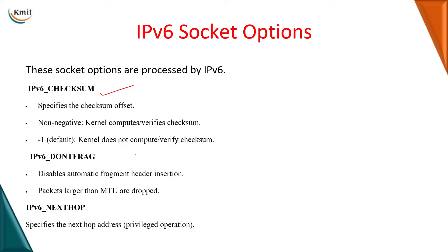IPv6 don't fragment: this option disables the automatic fragmentation of the message. If packets are larger than the maximum transfer unit, which is basically 1500 bytes, those packets are dropped. IPv6 next hop option specifies the next hop address.